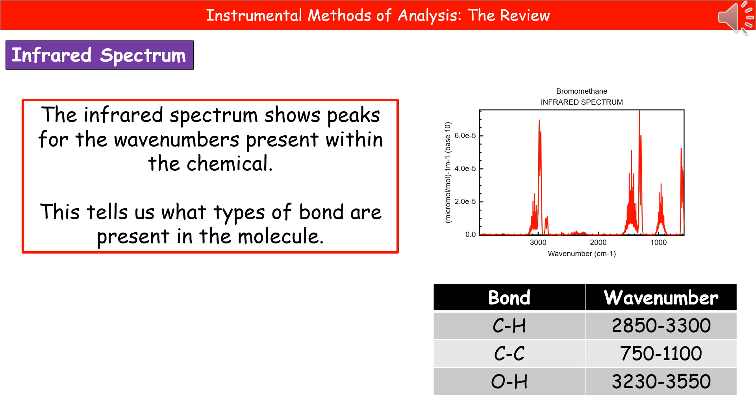If you look further along, we've got another peak around about 1,000, and that corresponds to our carbon-carbon bond. So from the information that we get there, we can work out the types of bond that we have present within our molecule.